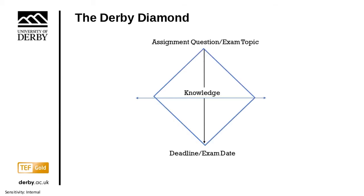The diamond brings in another aspect — it invites you to think about knowledge as part of this. We've still got our straight line for time, and we've got a horizontal line for knowledge. Over the course of your module you will be acquiring knowledge through attending lectures, doing reading to supplement those lectures and tutorials, and also for your assignment or your exam.